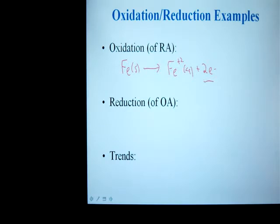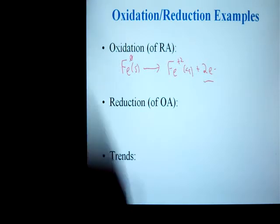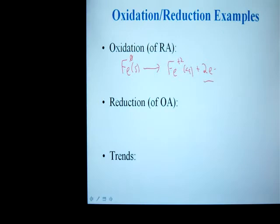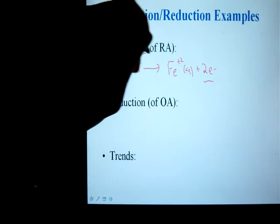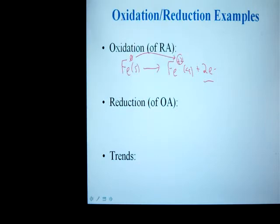Another way of being able to see it is looking at the charges of the species involved. Iron, any pure element, has a charge of zero. In this case, I'm going from zero to plus two. That is what we call an oxidation number, those charges.